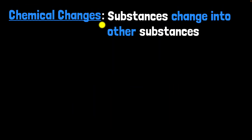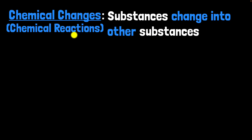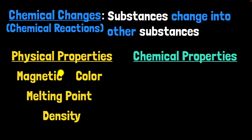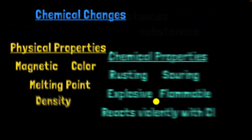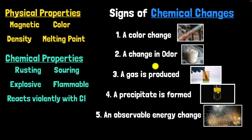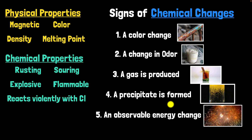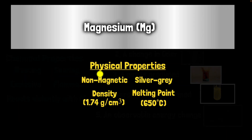Putting it all together: chemical changes are when substances change into other substances — new substances altogether. We call them chemical reactions. Just like physical properties can be measured without changing the identity of a substance, chemical properties can only be measured by changing the identity of the substance. Let's consider magnesium: it has physical properties like being non-magnetic and having a melting point, which you can observe without changing its identity.